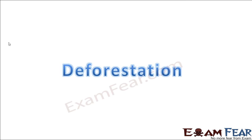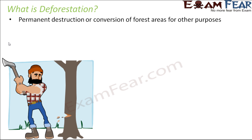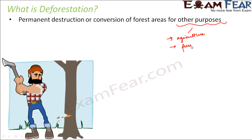What is deforestation? It is the permanent destruction or conversion of forest areas for other purposes. Why do we cut down masses of trees? One purpose could be agriculture — in order to feed a large population, we need more land to produce more crops. So we cut down forest areas and use the same land for cultivating crops that are useful and edible for us.